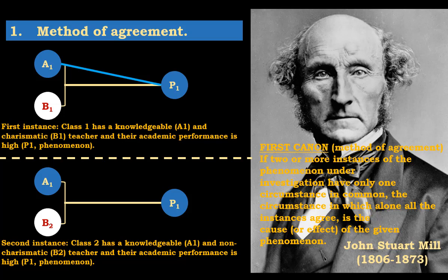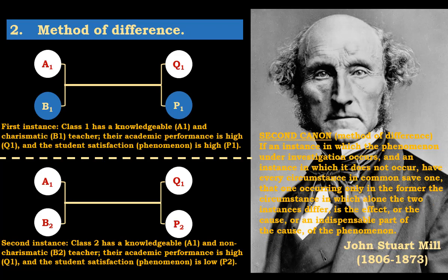Let's move to the method of difference, which Mill said was a much stronger method than the method of agreement. The second canon goes like this: if an instance in which the phenomenon under investigation occurs, and an instance in which it does not occur, have every circumstance in common save one — that one occurring only in the former — the circumstance in which alone the two instances differ is the effect, or the cause, or an indispensable part of the cause of the phenomenon.